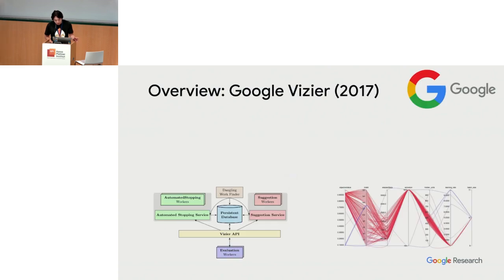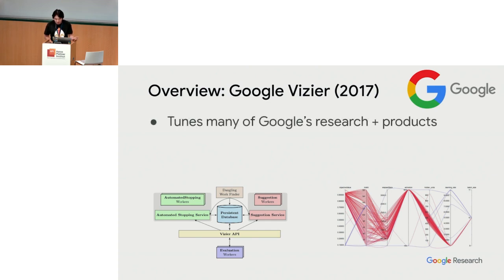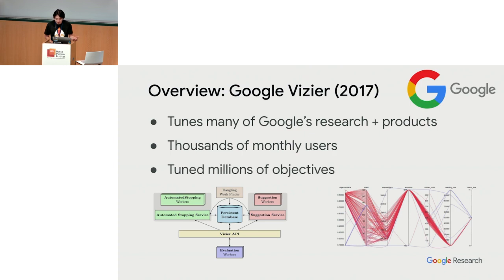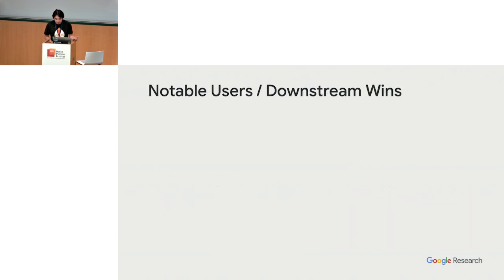As an overview, I'd like to start by giving a brief background on Google Vizier, the internal version. Google Vizier tunes many of Google's research and products. It has thousands of monthly users and has tuned millions of objectives. Notable users and downstream wins include search, ads, and YouTube — big money-making businesses for Google.